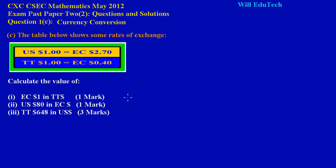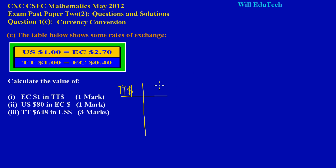I'm going to use a table to solve this for simplicity. I'll set up a table where since they're asking us how much Trinidadian dollars it would take to purchase one EC dollar, my left column will have TT dollars (Trinidad and Tobago dollars) and my right column will have the EC equivalent — Eastern Caribbean dollars.